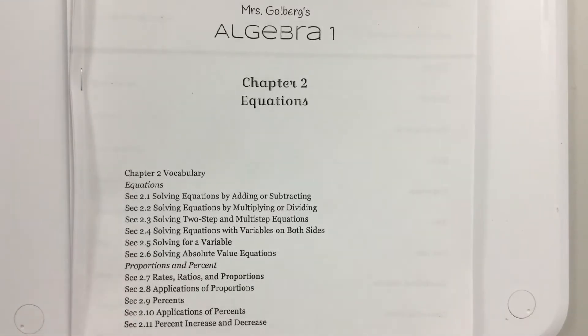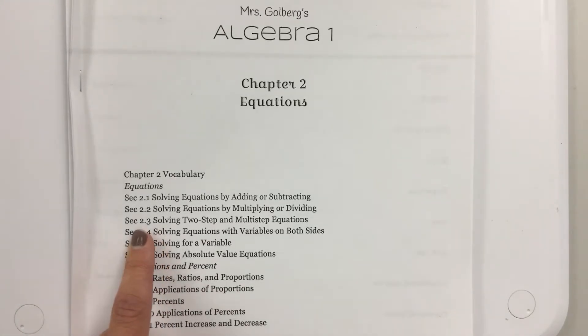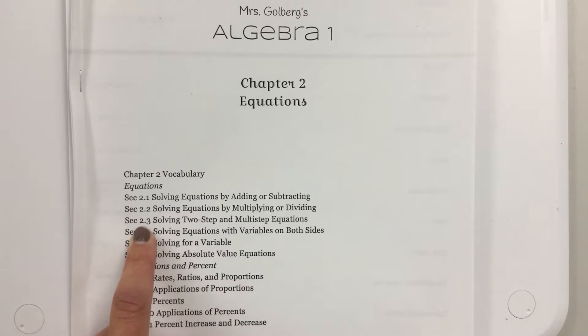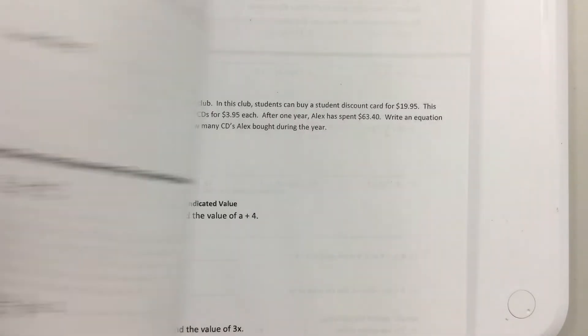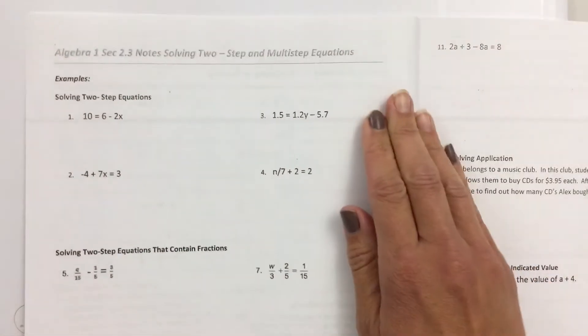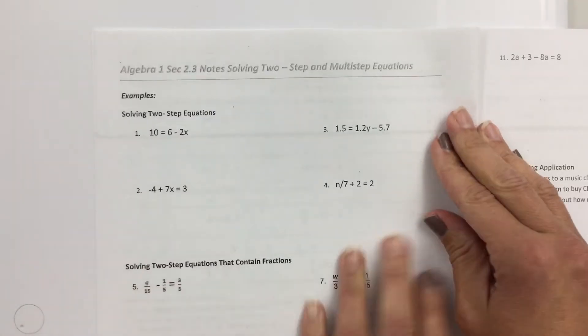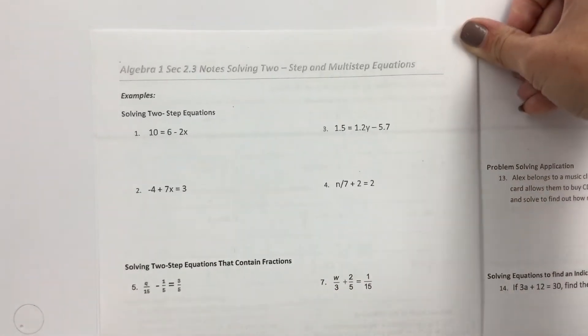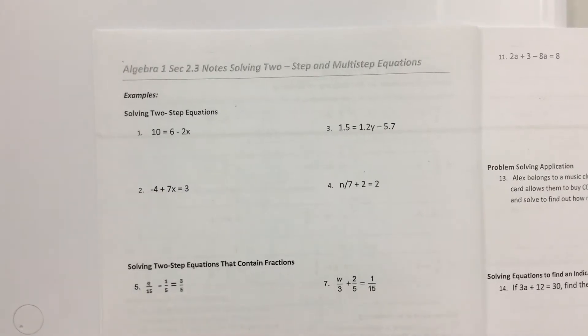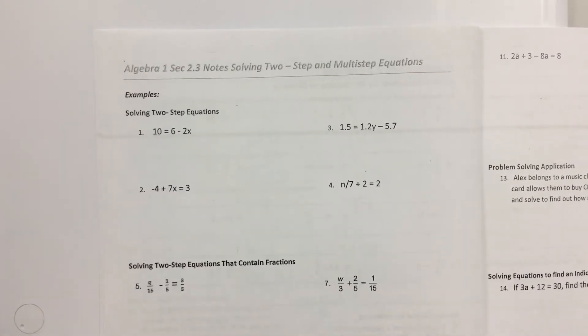Okay, Algebra 1, we are moving on to section 2.3, solving two-step and multi-step equations. So you are going to take what we have learned with adding and subtracting and multiplying and dividing to solve equations, and you're going to combine them into one problem.